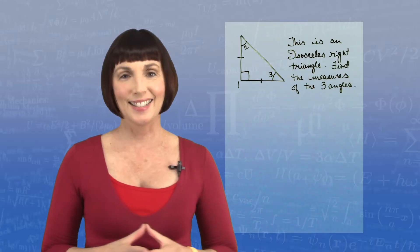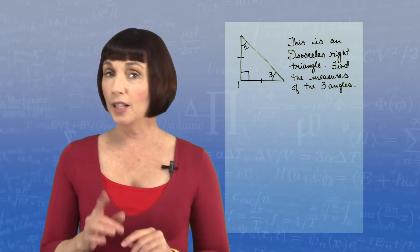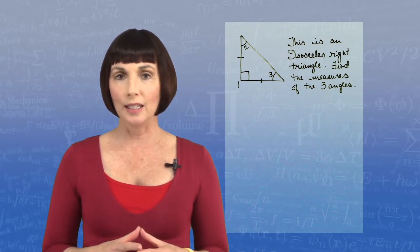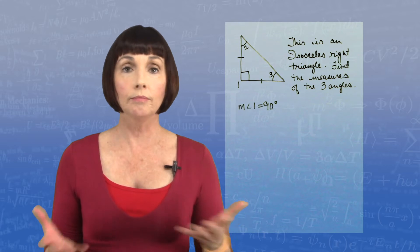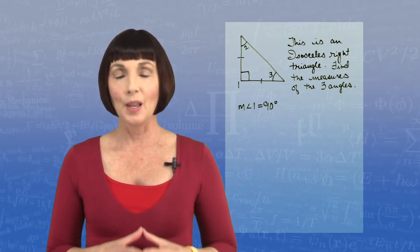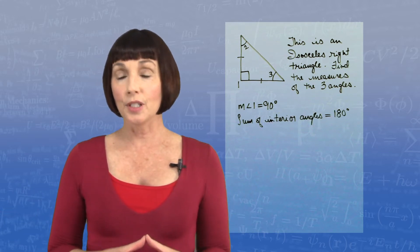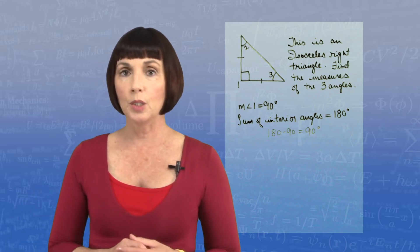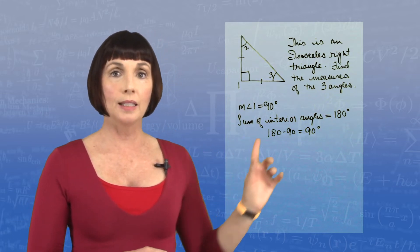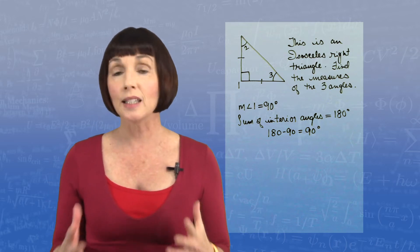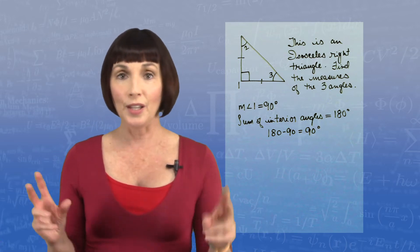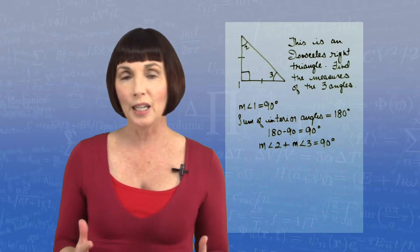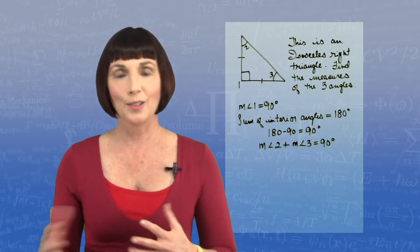Okay, let's take a look. This is a right triangle, which means that one of the angles measures 90 degrees. So the measure of angle one equals 90 degrees. Now the sum of the interior angles of any triangle equals 180 degrees, so we have 180 minus 90, or 90 degrees left over to make up with the other two angles. So the measure of angle two plus the measure of angle three will equal 90 degrees.